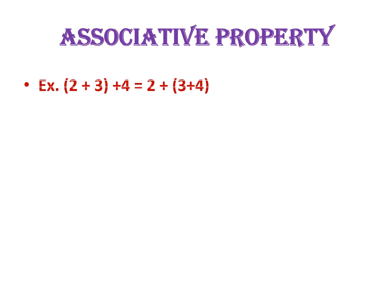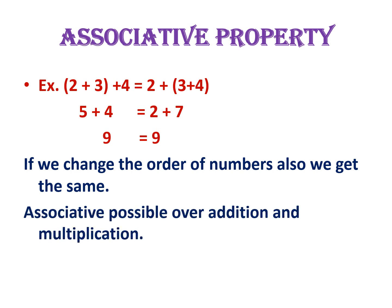Next one is associative property. Let's observe the given addition: 2 plus 3 plus 4. In both cases, we are getting the answer as 9. In this addition, if we add 2 and 3 first and then add 4 to the sum, it equals 2 added with the sum of 3 and 4. In both ways, we are getting the same result. This is called the associative property of addition, and it is also possible over multiplication only.